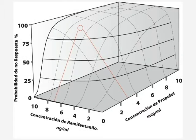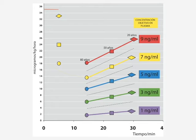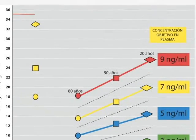Following adjustment of the primary infusion, we establish the secondary infusion for intubation. It is necessary to know the concentration of remifentanyl and propofol required to reach a probability of no response of 95% at the moment of intubation. This surface model represents the different isobulograms between remifentanyl and propofol. A probability of no response of 95% requires plasma concentrations of remifentanyl between 7 and 8 nanograms per milliliter and propofol between 2.5 and 3.5 micrograms per milliliter.